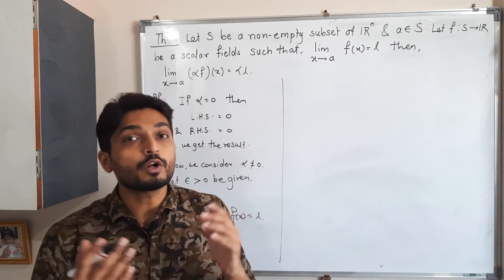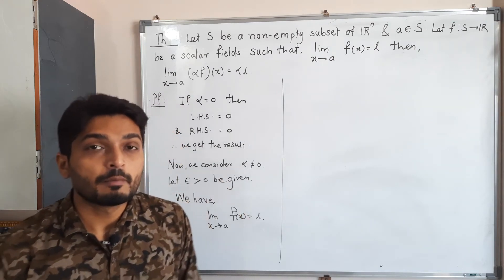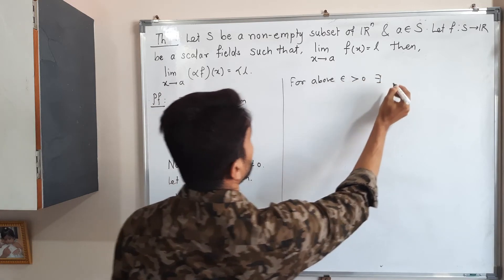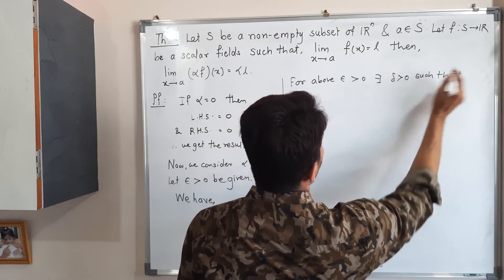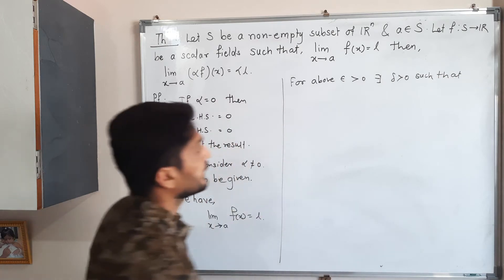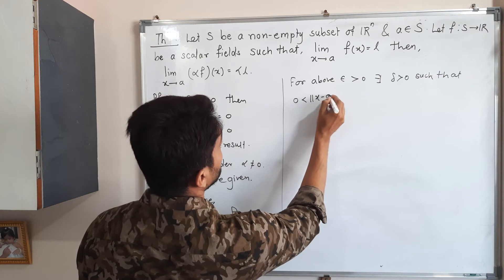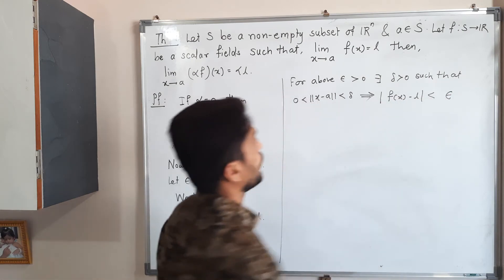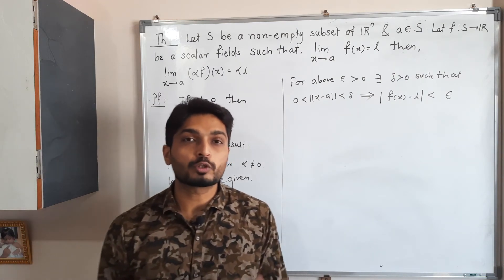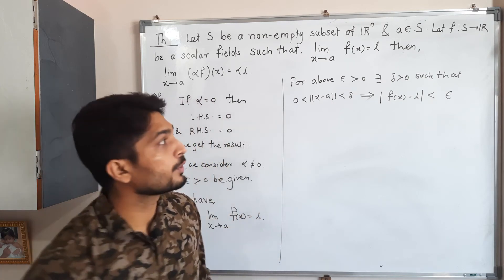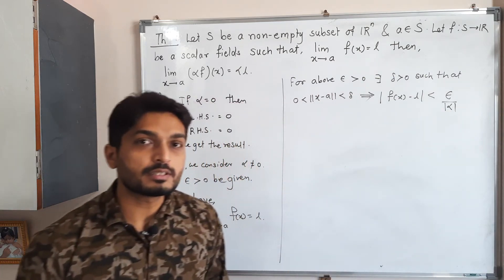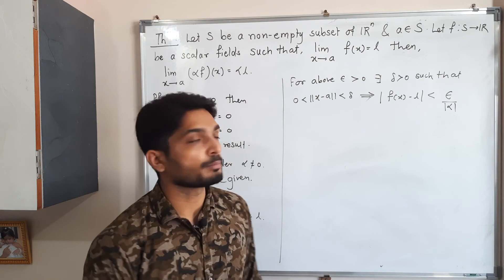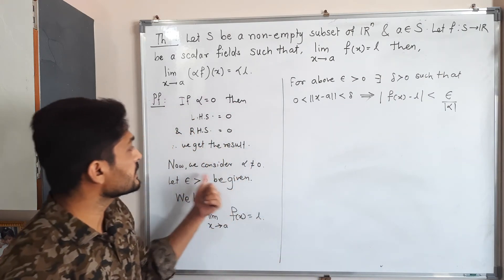Since epsilon is already chosen, for the above epsilon greater than zero there exists delta greater than zero such that zero less than |x − a| less than delta implies |f(x) − l| less than epsilon. As per the requirement of the theorem, we make a minor adjustment and write epsilon divided by |alpha| instead of epsilon. Since alpha is not equal to zero, the denominator is nonzero, so there is no issue.